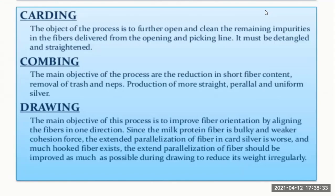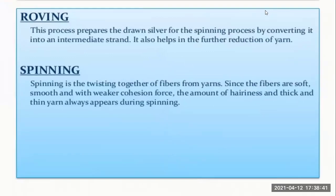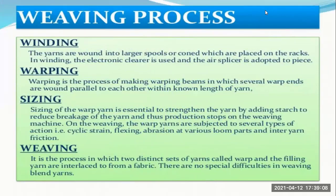The extent of parallelization should be improved as much as possible during drawing to reduce weight irregularity. Then roving: this process prepares the drawn sliver for the spinning process by converting it into an intermediate strand and helps in further reduction of yarn count. Then spinning: spinning is the twisting together of fibers to form yarns. Since the fibers are soft, smooth, and have weaker cohesion force, hairiness and thick-and-thin yarn issues can appear during spinning.